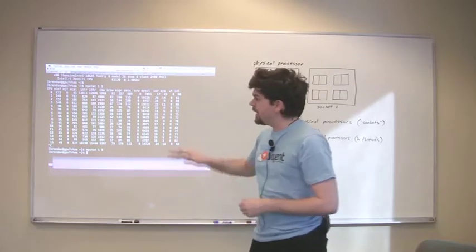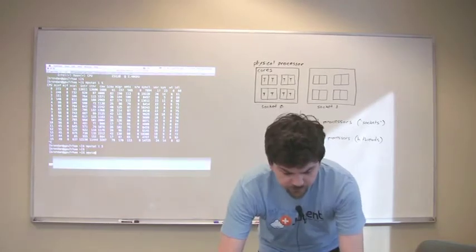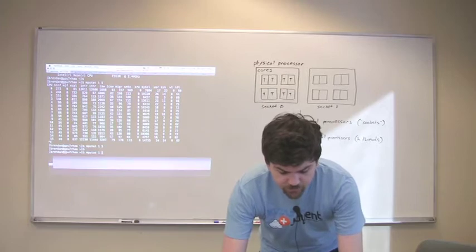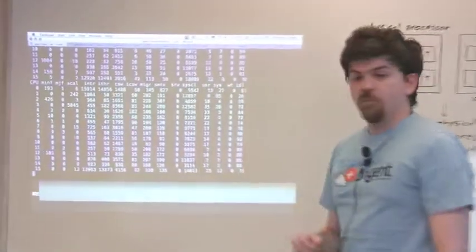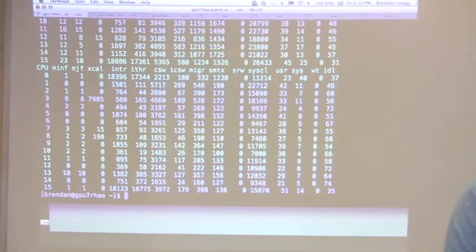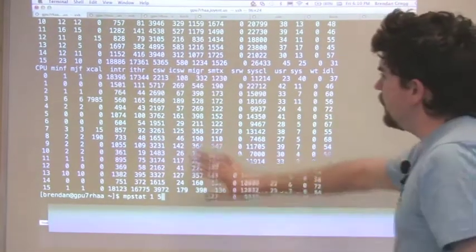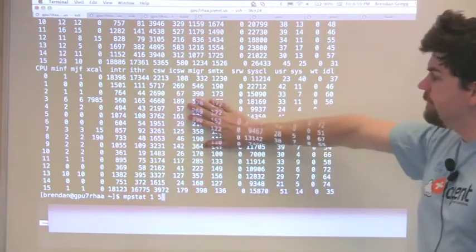To run MPStat, it takes two optional arguments, an interval and a count. So for example, I could say MPStat 1 5. What that will do is it will print out one-second summaries and will print output five times.